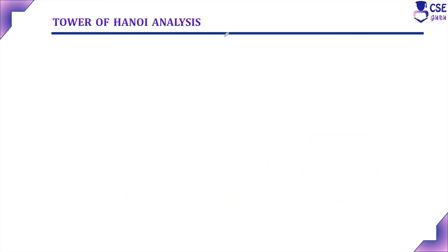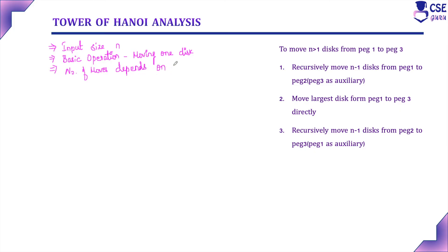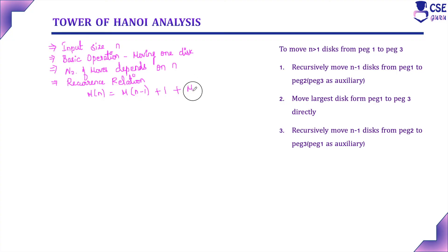Next, we will check the time complexity of Tower of Hanoi. The input size is N, and the basic operation is moving one disk. The number of moves depends on the value of N. Consider the recurrence relation: M(N) = M(N-1) — the time taken to move N-1 disks from peg 1 to peg 2 — plus 1, to move the largest disk from peg 1 to peg 3, plus M(N-1) — the time taken to move N-1 disks from peg 2 to peg 3. So we get M(N) = 2·M(N-1) + 1.